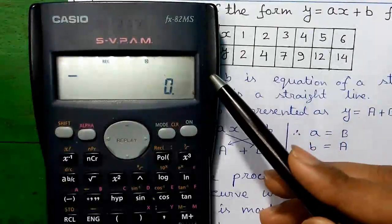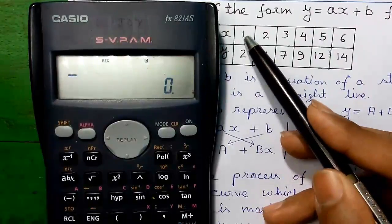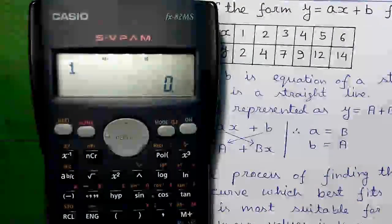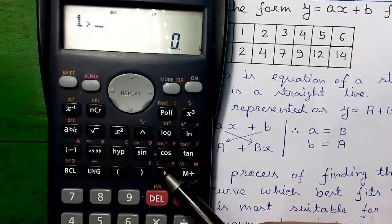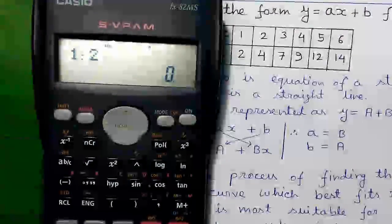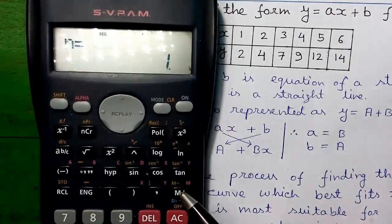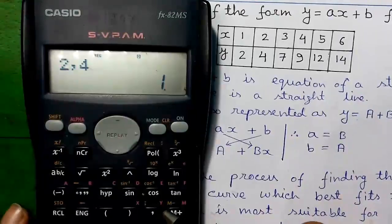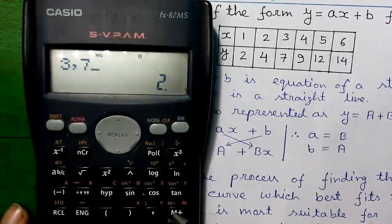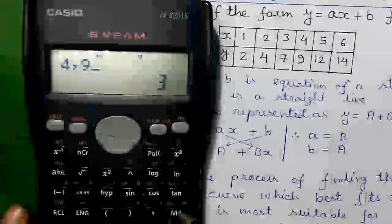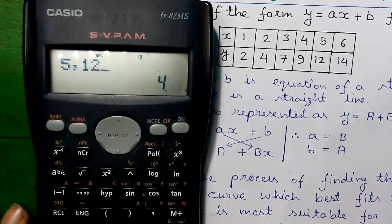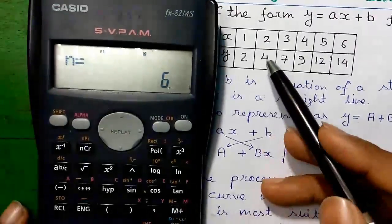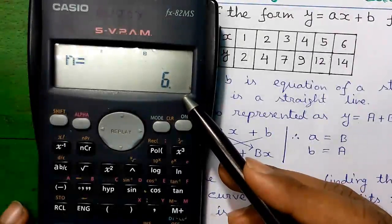Now we will enter the data into the calculator in XY pairs. Our first pair is X=1 and Y=2, so enter 1, press the comma button, enter 2, then press the M+ button. Continue entering: 2 comma 4 M+, 3 comma 7 M+, 4 comma 9 M+, 5 comma 12 M+, and 6 comma 14 M+. All the data is now entered into the calculator.